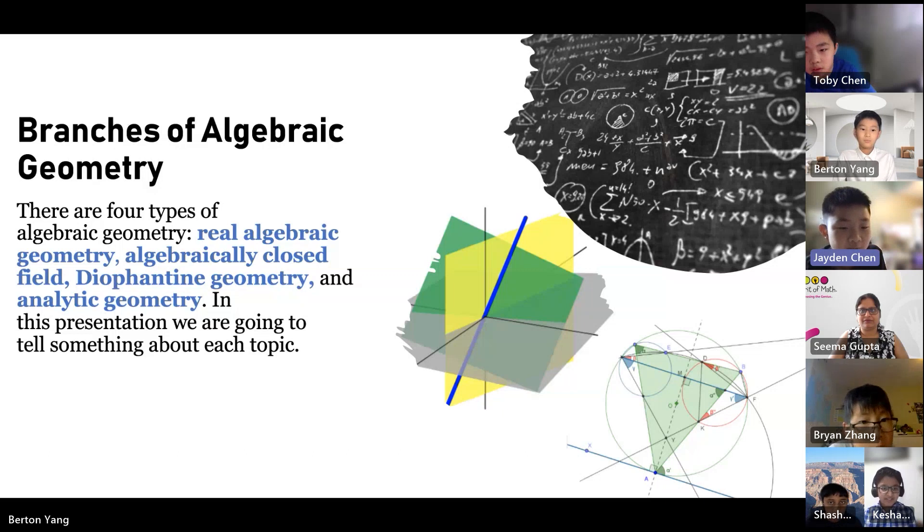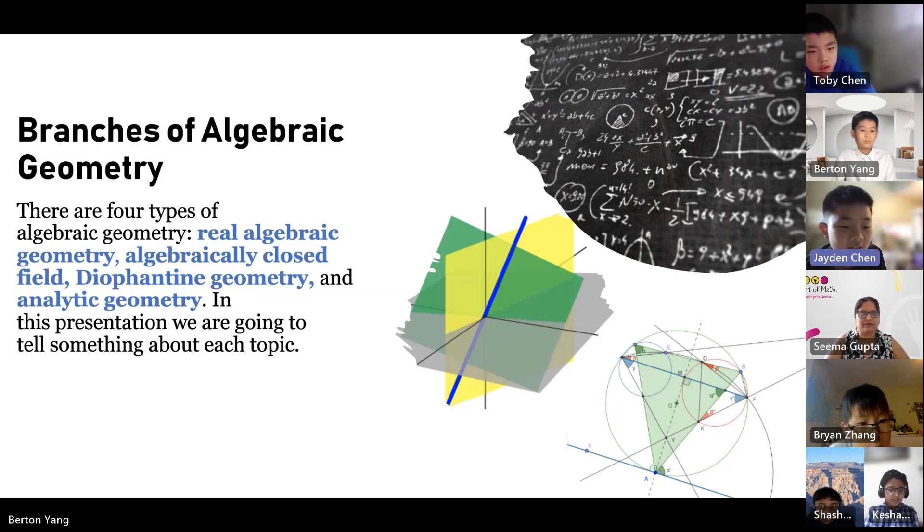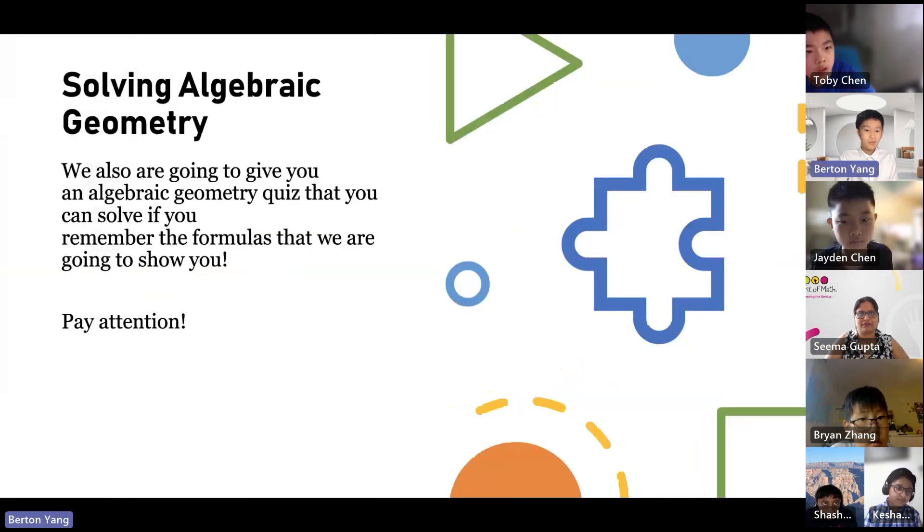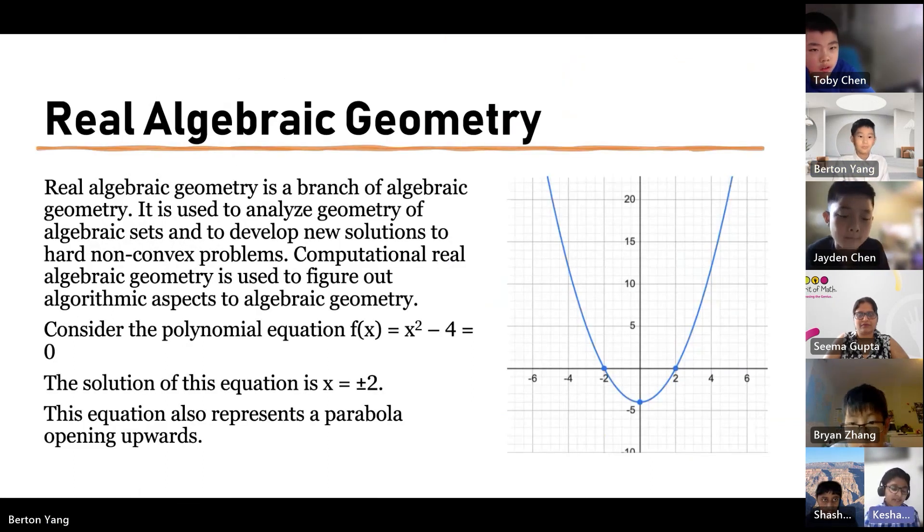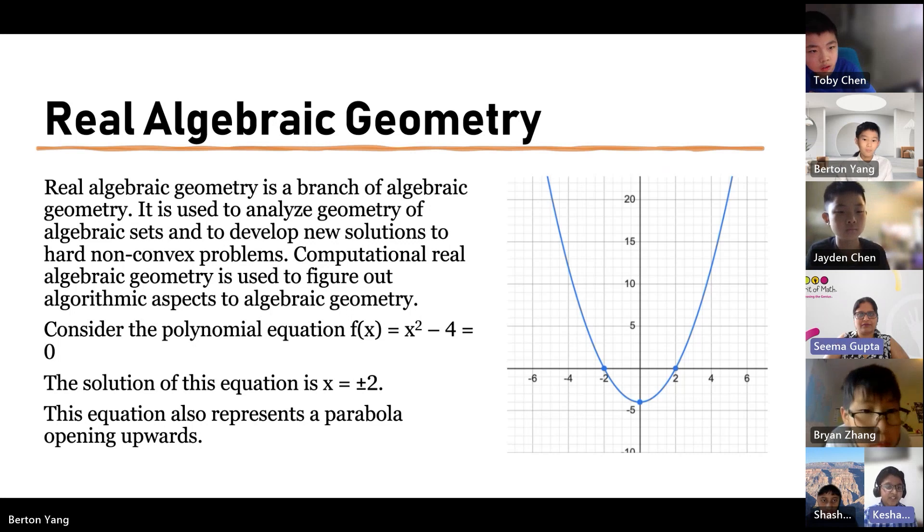Real algebraic geometry. Real algebraic geometry is a branch of algebraic geometry. It is used to analyze geometry of algebraic sets and to draw new solutions to hard, non-convex problems. Computational real algebraic geometry is used to figure out algorithmic aspects to algebraic geometry. Consider the polynomial equation x squared minus 4 equals 0. The solution of this equation is x equals plus or minus 2. This equation also represents a parabola opening upwards.